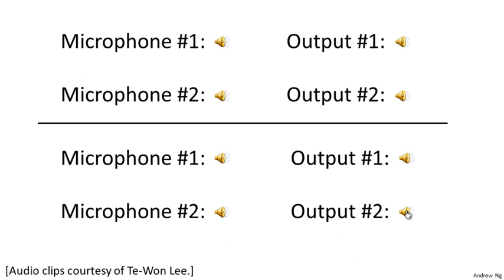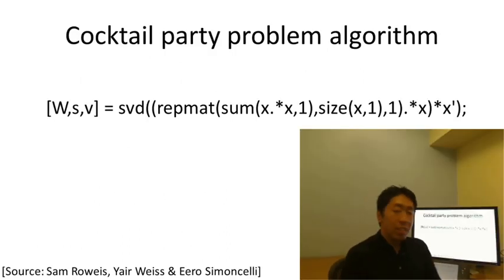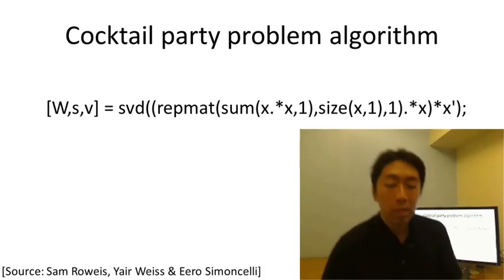So you might look at an unsupervised learning algorithm like this and ask how complicated is it to implement this? It seems like in order to build this application, it seems like to do this audio processing, you need to write a ton of code or maybe link into like a bunch of C++ or Java libraries to process audio. It seems like a really, really complicated program to do this audio, separating out audio and so on. It turns out the algorithm to do what you just heard, that can be done with one line of code shown right here.